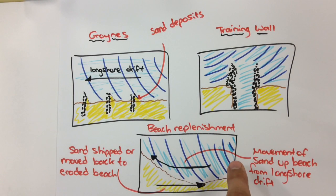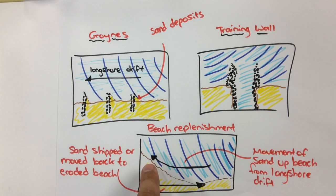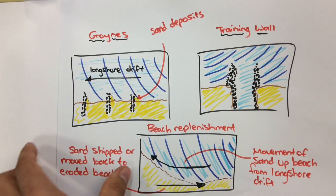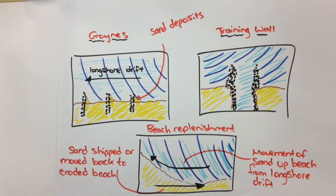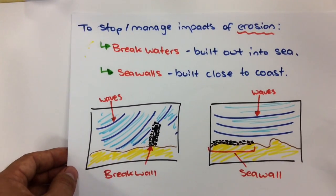This is beach replenishment. As longshore drift moves sand from one side of the beach up the other way, people can collect that sand in big trucks and ship it all the way back down to replenish the stocks of sand that have been eroded and moved as a result of longshore drift. Things like that happen quite a lot in Adelaide. Let's now talk about the management of erosional forces on the beach.